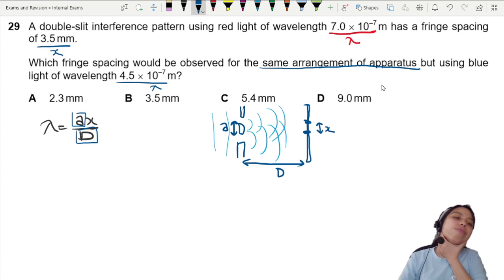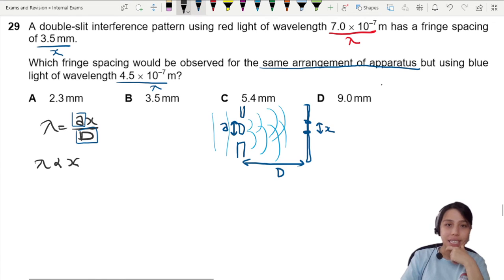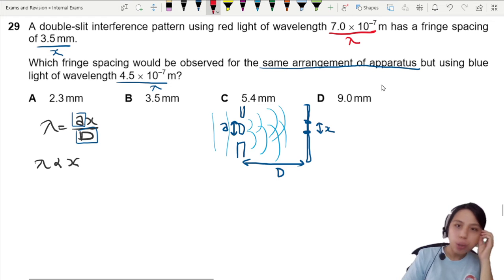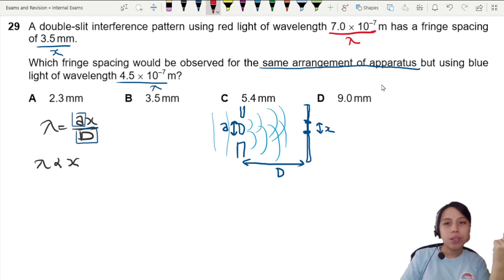So we can conclude that if everything is kept constant, λ is proportional to x. Let's do a ratio. We start off with red light, so I can say 7.0×10^-7 over 3.5mm. I'm going to keep it in mm because we're doing a ratio, so we can kind of cheat a bit.